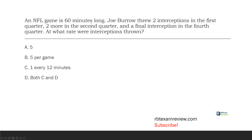Question three. An NFL game is 60 minutes long. Joe Burrow threw two interceptions in the first quarter, a few more in the second quarter, and a final interception in the fourth quarter. At what rate were the interceptions thrown? We're measuring rate. Rate is frequency over time. Our frequency is how many times Joe Burrow threw an interception: two in the first, plus two in the second is four, plus one final in the fourth quarter is five. Joe Burrow threw five interceptions over 60 minutes.